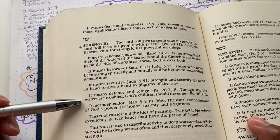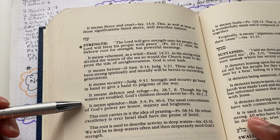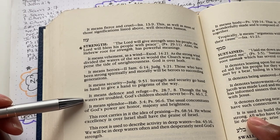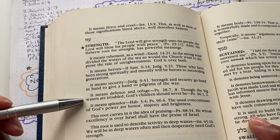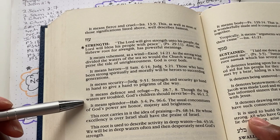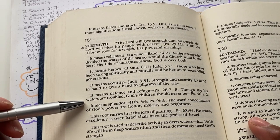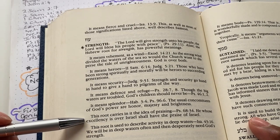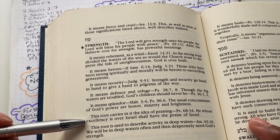strength and security go hand in hand to give a hand to pilgrims of God the way. It means defense and refuge. If you look at Psalms 28 verses 7 and 8. Though the big waters are troubled, God's children should never be. And you can also look at Psalms 46, 1 and 2.